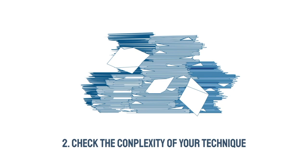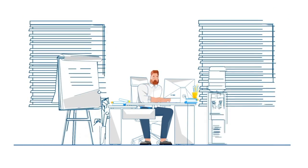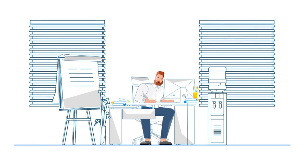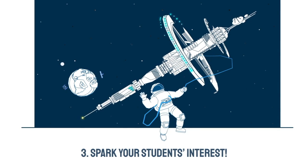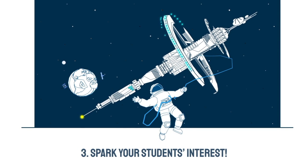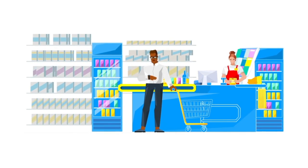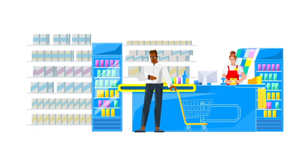Number two: check the complexity of your technique. To bring out the perfect lecture, the teacher needs to make sure his or her techniques are appropriate and not too complicated to understand. In other words, the teacher will modify the technique's complexity to match the student's level. Number three: provide techniques that spark students' interest. To improve student engagement in class activities, teachers should provide techniques that can spark student interest — in other words, teachers should try to engage students with topics that are relevant to their daily lives, cultural customs, and so on.